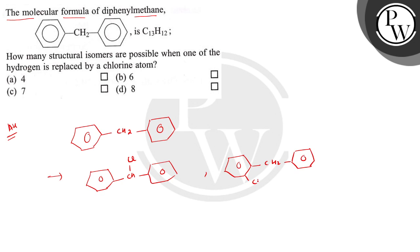Then it may be ortho. The other possibilities are meta and para. So these are the possible isomers that can be formed when one of the hydrogen is substituted by chlorine.